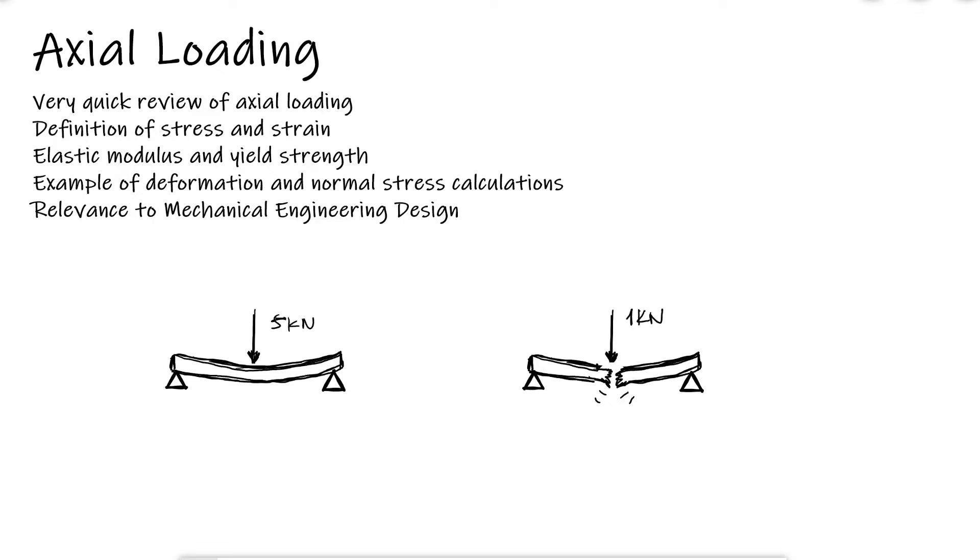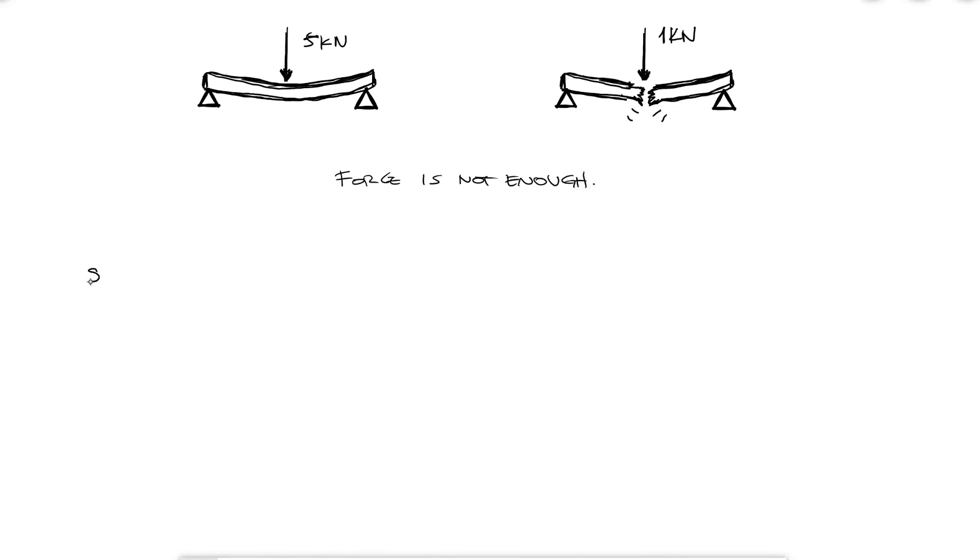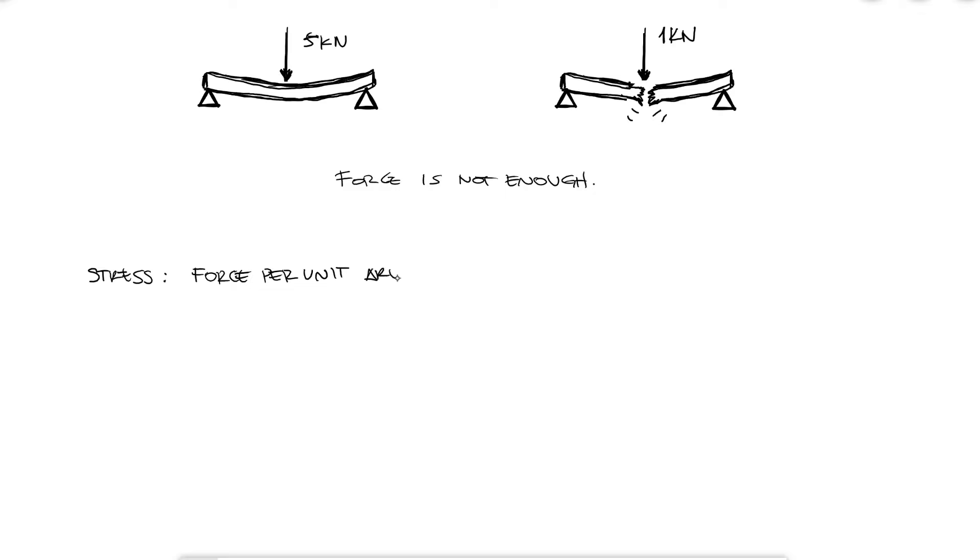There might be more than one reason for this. The beam on the left might be thicker or it may be made out of a material that can withstand a higher stress, so looking at a 5kN force versus a 1kN force is not enough. And that is why we use stress, which is defined as force per unit area.